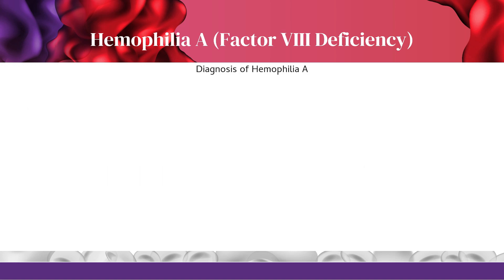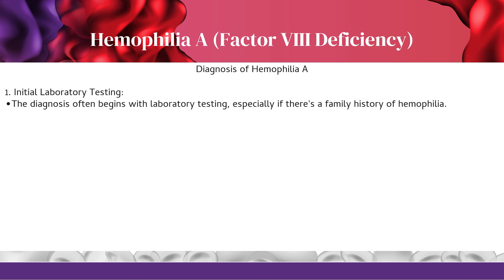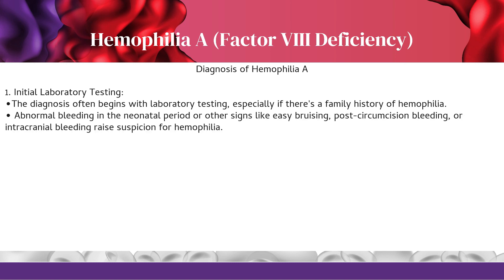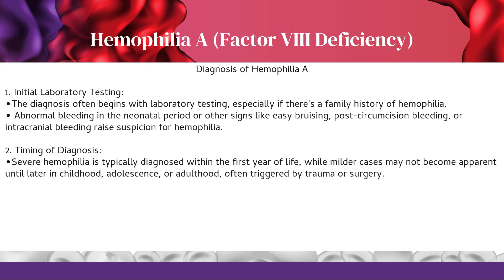Hemophilia A diagnosis often begins with laboratory testing, especially if there's a family history of hemophilia. Abnormal bleeding in the neonatal period or other signs like easy bruising, post-circumcision bleeding, or intracranial bleeding raise suspicion. Severe hemophilia is typically diagnosed within the first year of life, while milder cases may not become apparent until later in childhood, adolescence, or adulthood, often triggered by trauma or surgery.